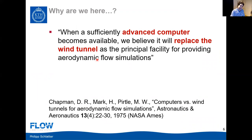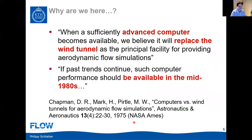There's also an interesting quote from a 1975 paper from NASA Ames, which essentially says that when a sufficiently advanced computer becomes available, it will eventually replace all wind tunnel experiments in the world. Most of us focusing on simulations believe that at some point, perhaps all experiments can be done on a computer—but we all disagree a little bit on when this happens. In that 1975 paper, they were predicting this would happen during the 1980s, perhaps 10 to 15 years later. And of course, we all know it came a little bit differently.